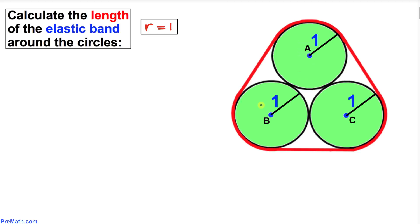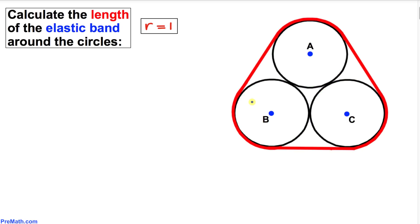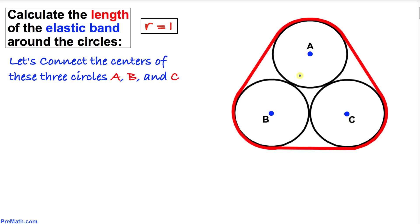Welcome to pre-math. In this video tutorial we have three identical circles with radius one that are tangent to each other, and we are going to calculate the length of the elastic band around these three circles. Let's go ahead and get started with the solution.